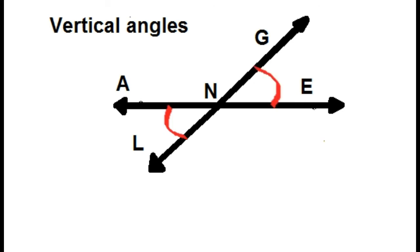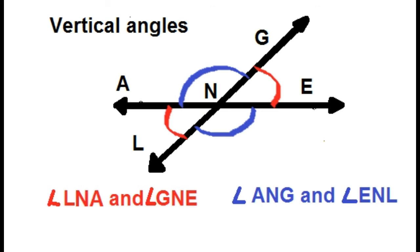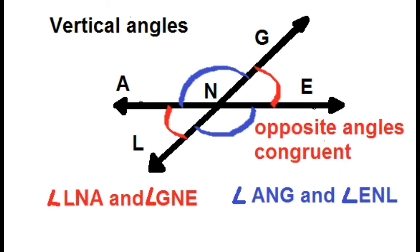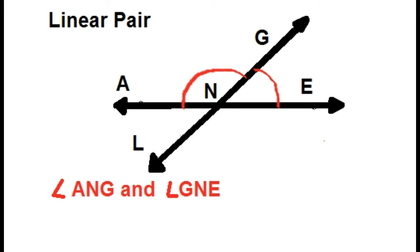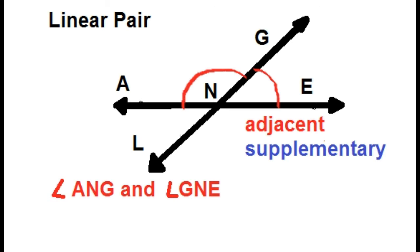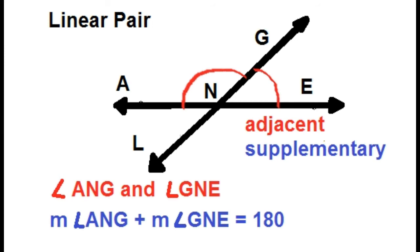Angle LNA and angle GNE are vertical angles. Angle ANG and angle ENL are also vertical angles. Vertical angles are not adjacent — they are opposite angles and they are always congruent. Angle LNA is congruent to angle GNE, and angle ANG is congruent to angle ENL. The third type is the linear pair: angle ANG and angle GNE are linear pairs. They are adjacent and also supplementary, meaning the measure of angle ANG plus the measure of angle GNE is equal to 180 degrees.